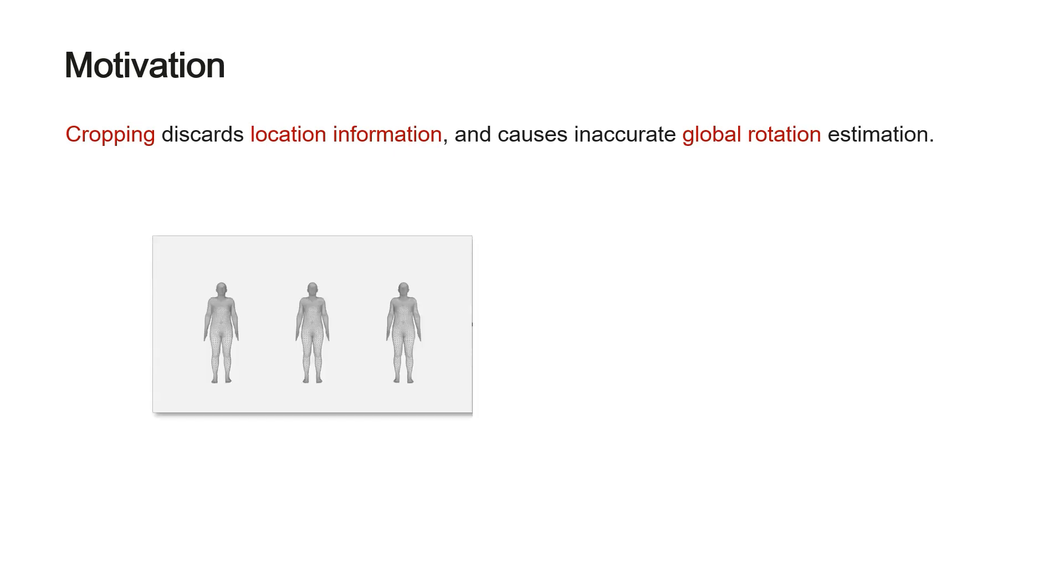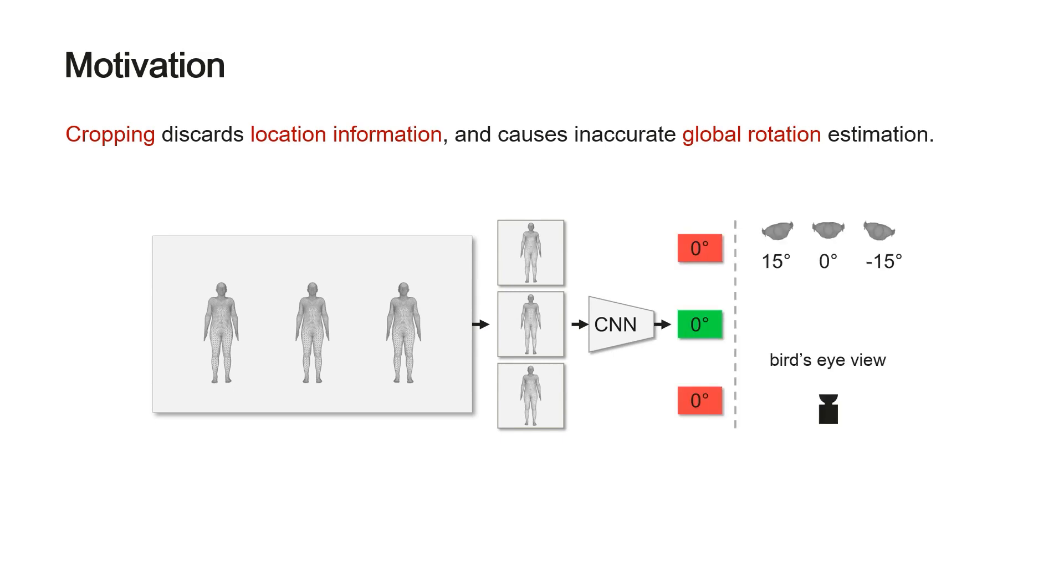Take this image as an example. After cropping, the cropped images look similar. When fed to CNN models, they will get close predictions. In fact, the three persons of interest have clearly different global rotations, which can be seen from the bird's eye view.